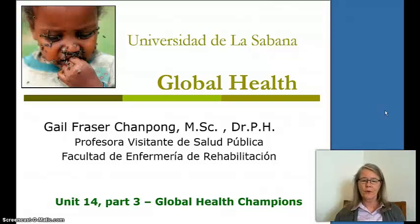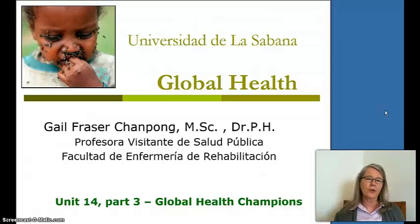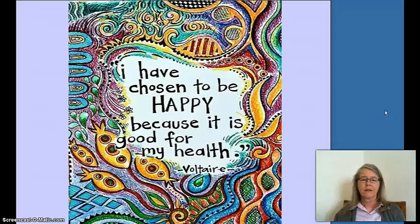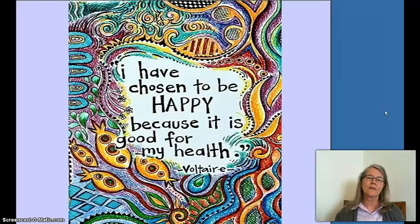Let's start on Part 3. You may have noticed in the video there were wildebeest, elephants, and cheetahs — animals that tsetse flies are attracted to. Areas with herding animals generally have a lot more tsetse flies. We can choose to be healthy and make a difference — we need to face global health challenges and think of new ways to address them.